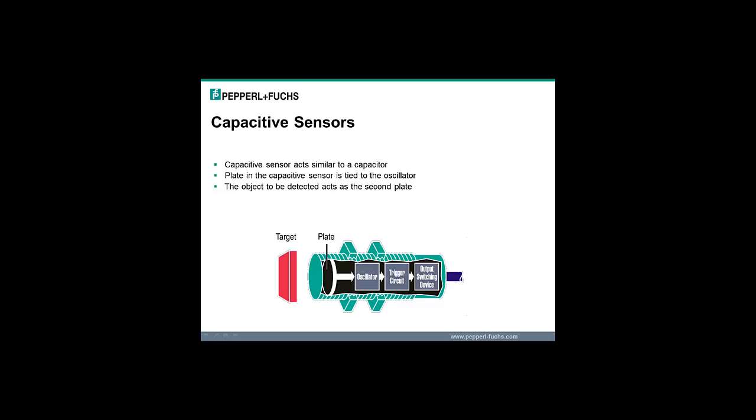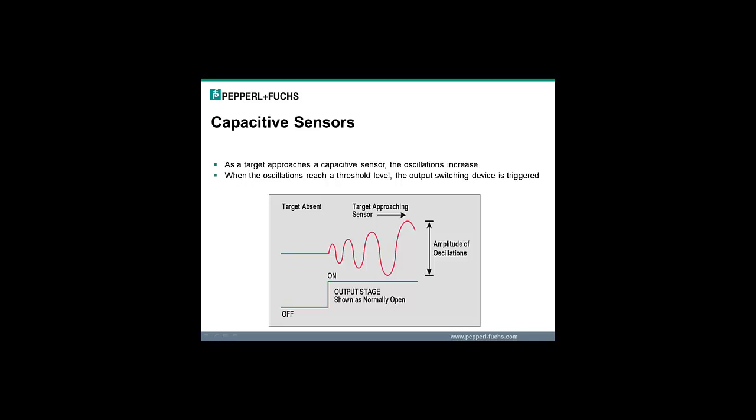The basic concept of a capacitive sensor is that it acts similar to a capacitor which has two plates. One plate inside the sensor is tied to the oscillator. The second plate is the target material. The sensor's rated distance is based on the test target, which is a grounded copper plate. As the target approaches the capacitive sensor, the internal oscillator begins and will increase in amplitude depending upon the target distance. When the internal oscillation reaches a defined threshold level, the output switching device is triggered and you will get an output from the sensor.